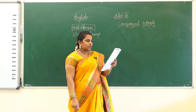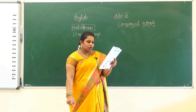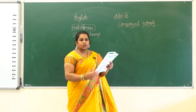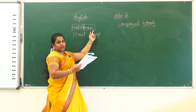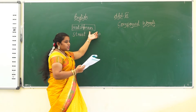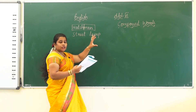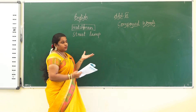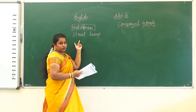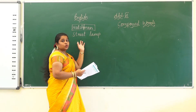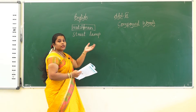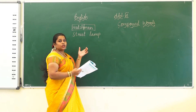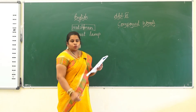Compound words. Did you notice the bold words are made up of two words? Watch is one word, man is one word — two words join together and frame a new word, watchman. Here, street is one word, lamp is one word. Two different words join together and form a new word, street lamp. So it is a compound word.